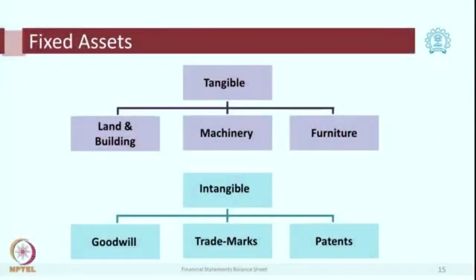Other examples of intangible assets: suppose you are doing scientific research and develop a new product — you will apply for a patent. If you get a patent, it has important economic value and is an example of an intangible asset. If you have a creative drawing or a new design, it can be registered as a copyright. A trademark is also an example of an intangible asset. So we have patents, trademarks, and goodwill.